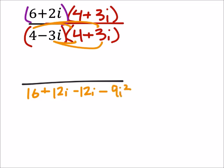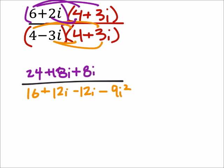Now let's look at the numerator as well. So 6 times 4 is 24, because this one is not a conjugate, so nothing is going to cancel out. So I've got 6 times 3i, which is a positive 18i. 2i times 4 would be a positive 8i. And then 2i times 3i would be a positive 6i squared.